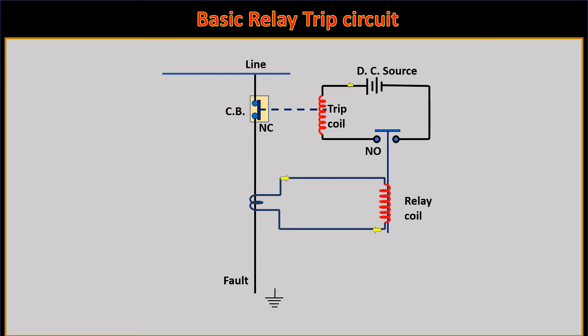Under abnormal conditions, current, voltage, phase angle, and frequency may change. The relay operates when it detects the fault, which completes the trip circuit and thus opens the circuit breaker, disconnecting the faulty circuit. A protective relay is a device that detects the fault and indicates the operation of the circuit breaker to isolate the defective element from the rest of the system.